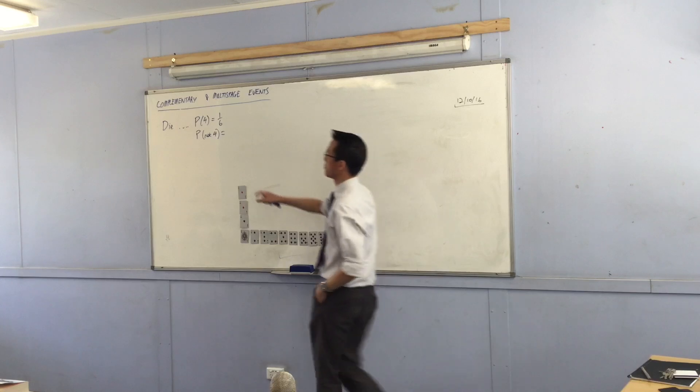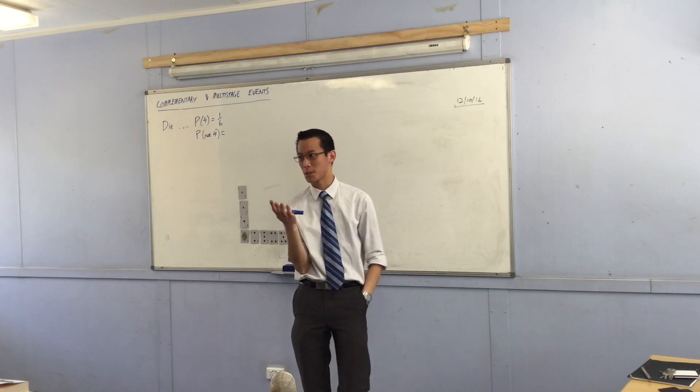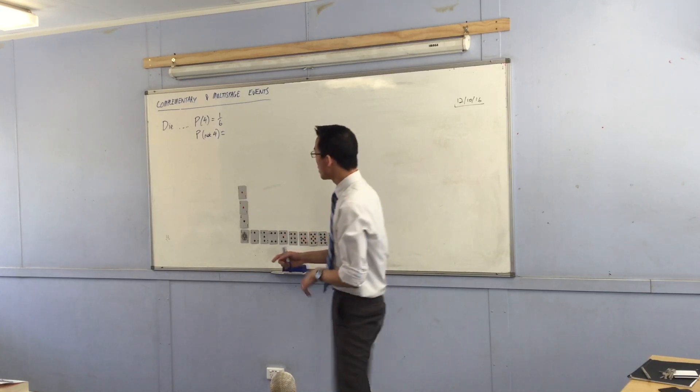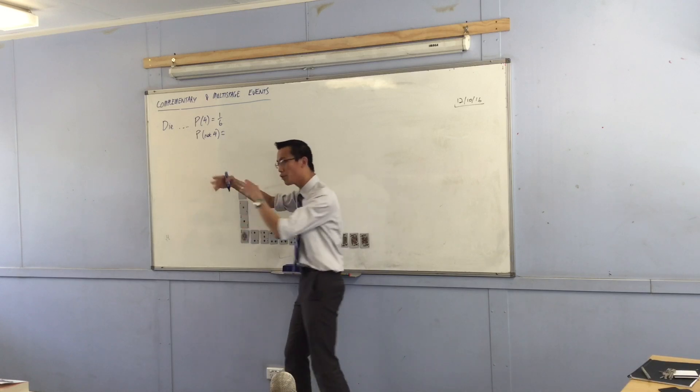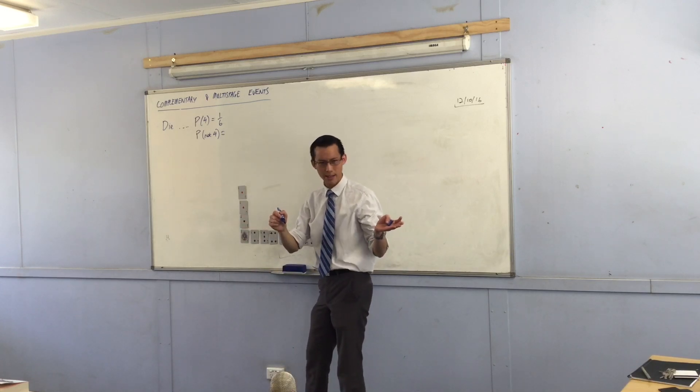And the long way is, what are the ways of not rolling four? What are the actual ways? One, two, three, five, and six. So, the probability of rolling not a four, is all of those probabilities, do I multiply them, or do I add them? Add them.